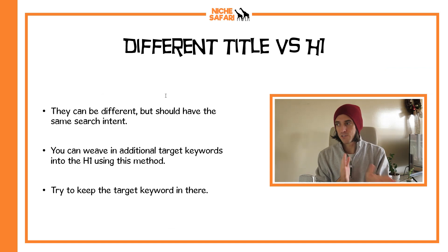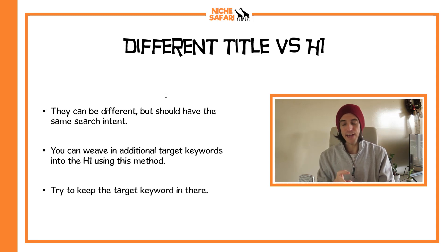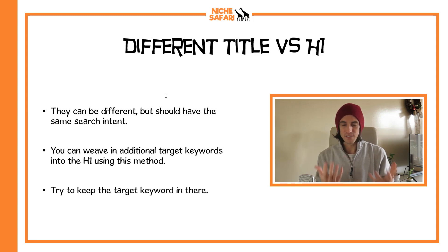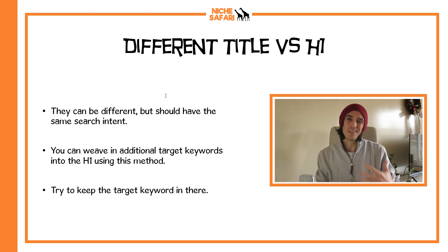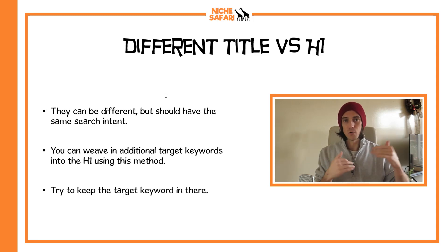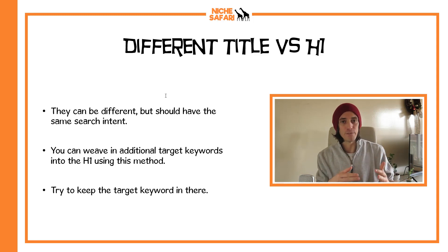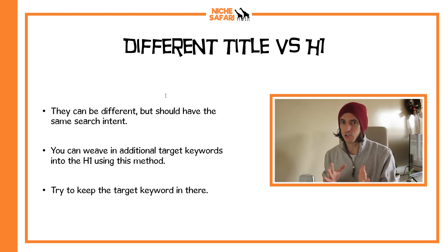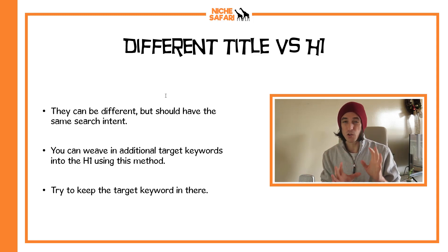So a couple of quick rules for a different title and H1: they can be different, but they should have the same search intent. You can weave in additional target keywords into the H1 using this method. And try to always keep the target keyword in there — for example, in that last one, 'how to rank a blog on Google,' the target keyword might be 'rank a blog on Google,' and I've got 'ways to' and 'how to', so I'm saying to Google, look, I'm trying to rank for this keyword but here are a couple of different variations with the same search intent. So let's jump over to another blog post and I'll show you how I might separate the H1 and the title so that I rank for a few more of the longer tail keywords.